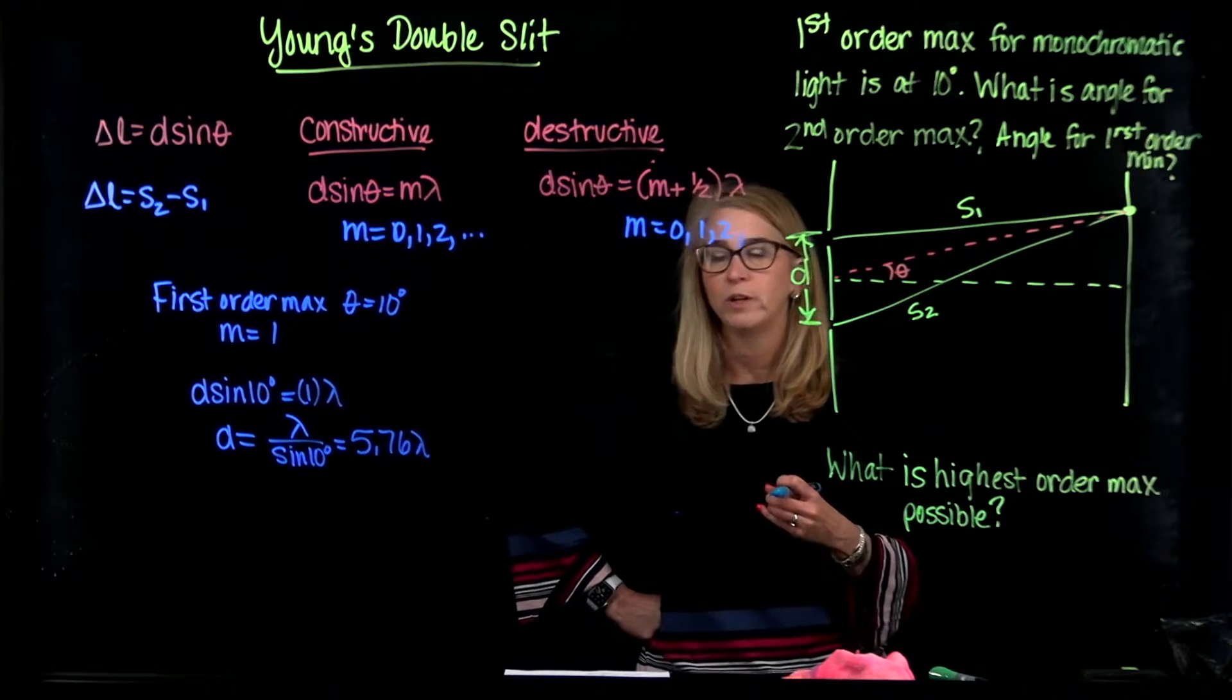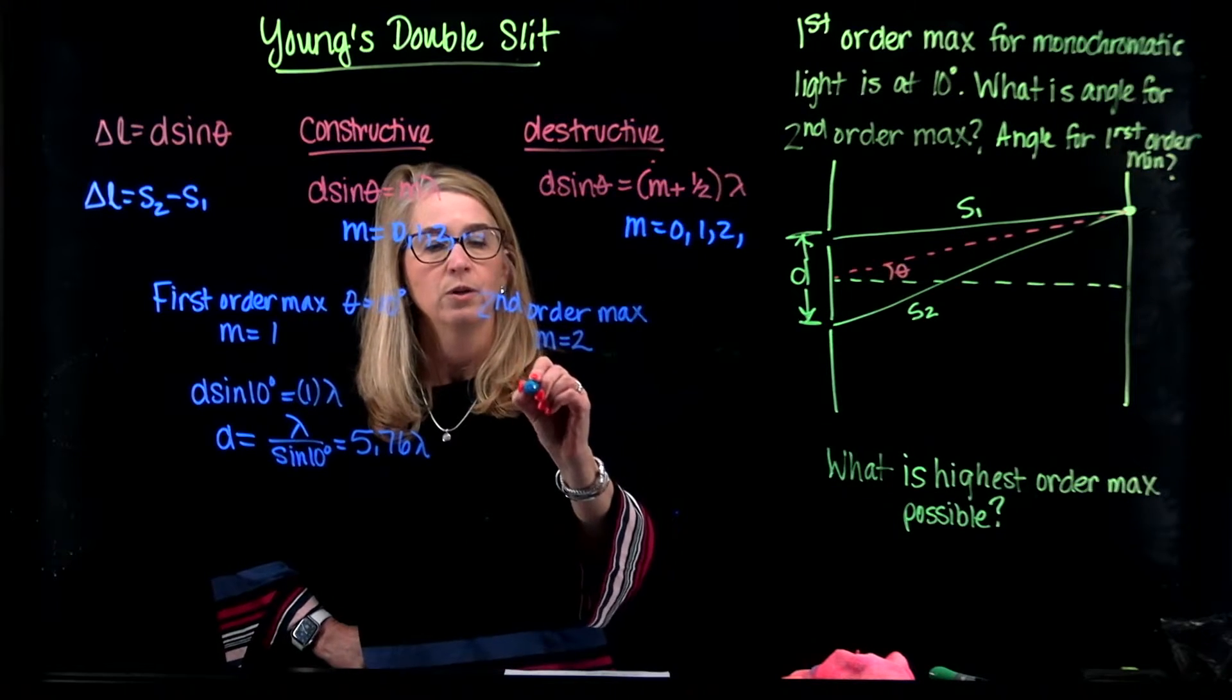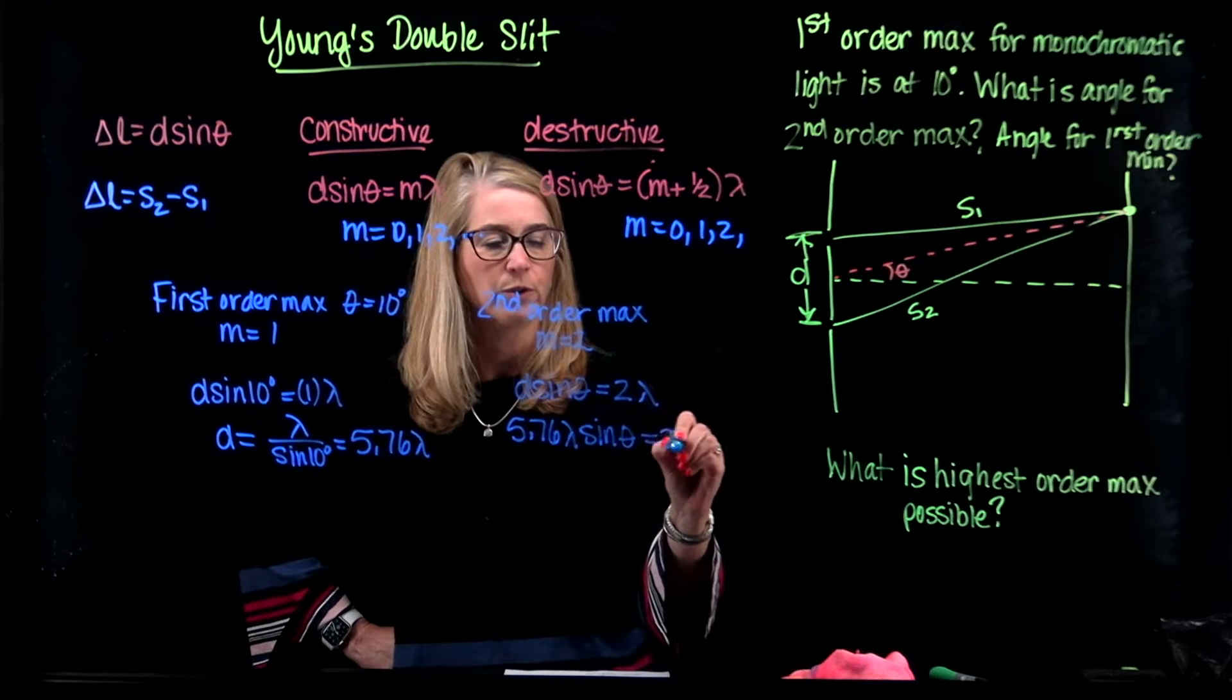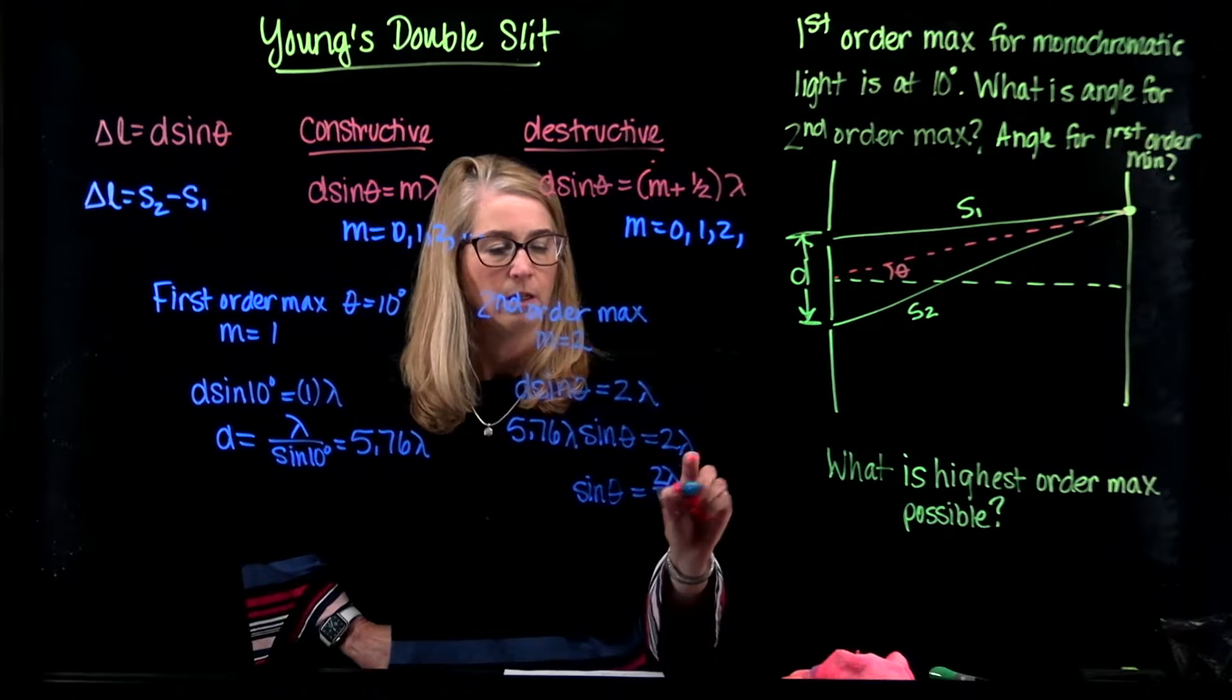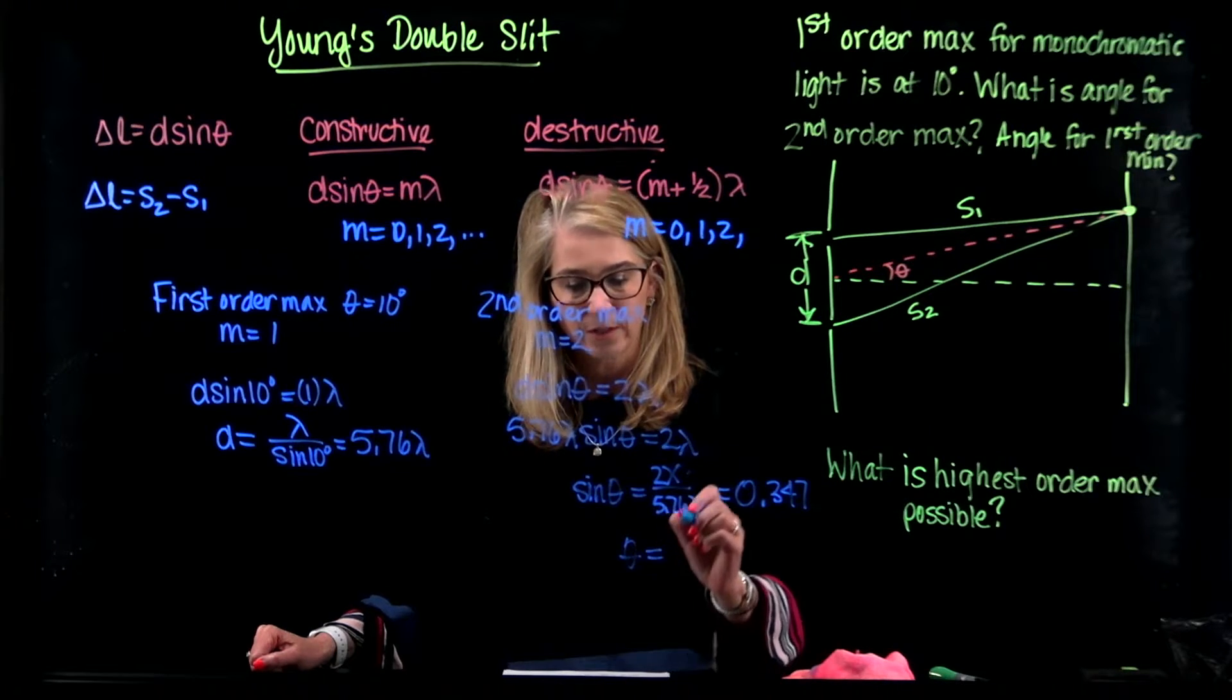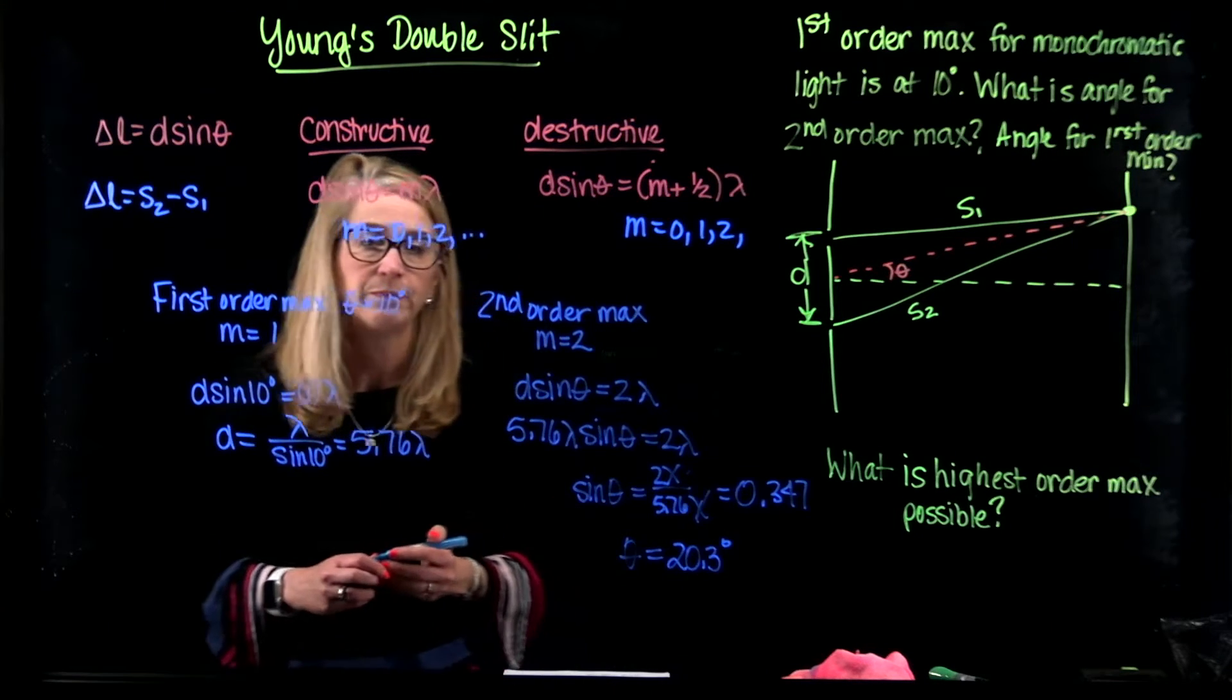So I used that information and now I want to find out what the second order max is. Second order is M equals 2. So D sine theta is 2 times the wavelength. D I found was 5.76 times the wavelength times the sine of theta is equal to 2 lambda and if I solve for theta I get 2 lambda over 5.76 lambda, the lambdas cancel out and I get 0.347. If I take the inverse sine to figure out my angle, I found that this angle that has a sine of 0.347 is actually equal to 20.3 degrees. So I did that.